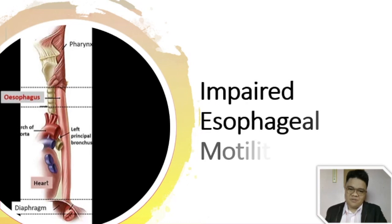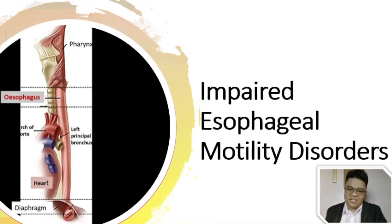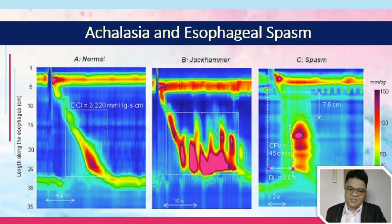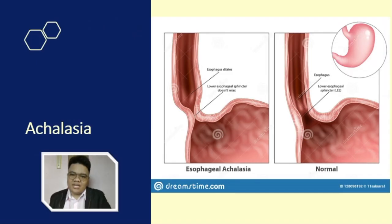In this presentation, we'll be talking about your impaired esophageal motility disorder — specifically achalasia and esophageal spasm. The picture here shows the result of manometry. As you may recall from our discussion and assessment, manometry is used to measure the pressure in the esophagus going towards your LES or lower esophageal sphincter. So we'll be talking about these anatomical parts of our body in this discussion.